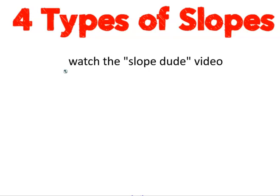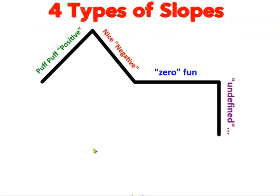Now if you've never checked out the Slope Dude video on YouTube, you should search for it. But this is a summary of what happens in that video. Slope Dude is a guy who's skiing, and he says these words as he's skiing along this particular mountain. He's going up the hill, he says puff puff positive, because any line moving in this direction has a positive slope. Then as he's going down the hill, he says nice negative. And this has a negative slope. When he gets to this flat horizontal part here, he says this is zero fun. This is zero fun.